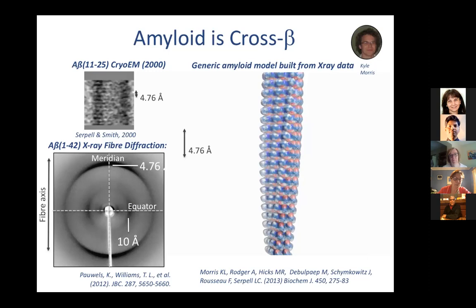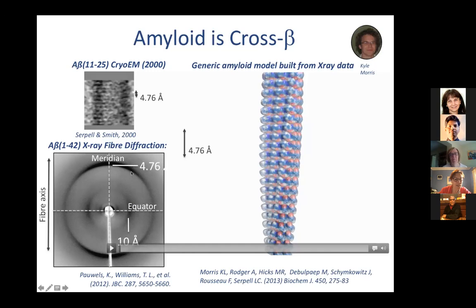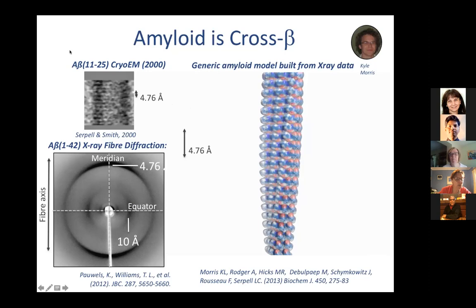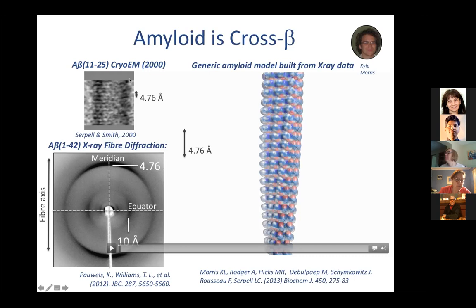As Sheena nicely said, I started off my career looking at the structure of amyloid. This is a relatively brief slide that harks back to the X-ray fibre diffraction information we worked hard to generate. Some time ago we looked at a short peptide from the middle of amyloid beta — residues 11 to 25 — which self-assembles into incredibly ordered fibrils. By cryo-electron microscopy we were able to collect data showing the cross-beta structure whereby beta strands run perpendicular to the fibre axis.